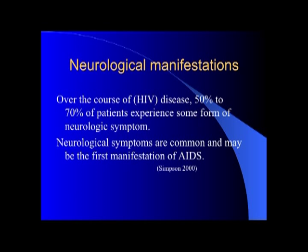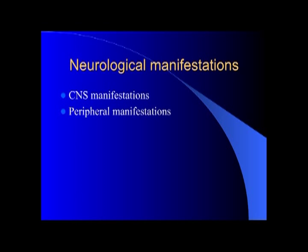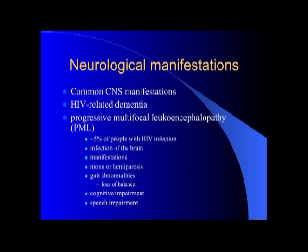The longer patients live now, the more tendency there is to see pain symptoms, complications, and everything else that comes with the disease. Neurological symptoms can be one of the most common presentations, and manifestations can be CNS or peripheral. We can also see dementia related to HIV, CNS manifestations, and PML.